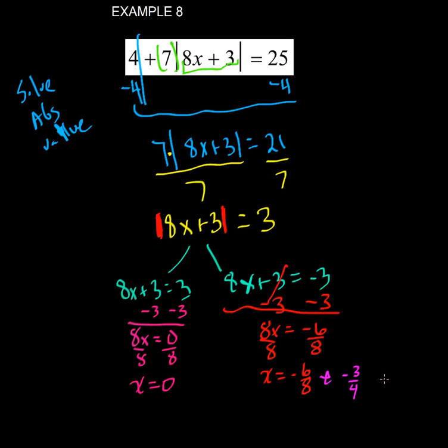Or we can say negative 0.75. Either one is acceptable. So those are your answers: 0 and negative 3 over 4.